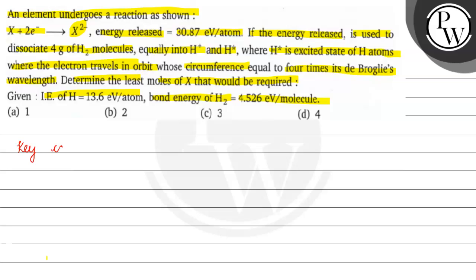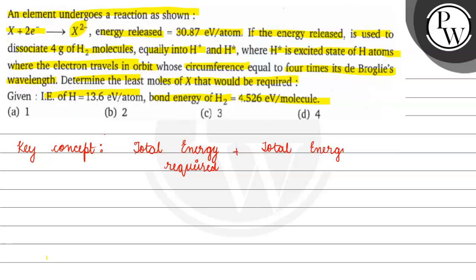The key concept for this question is that whatever energy remains in the system is conserved. That means the total energy required will equal the sum of all energy contributions — it will net to zero when we account for everything.